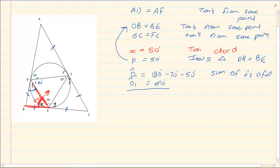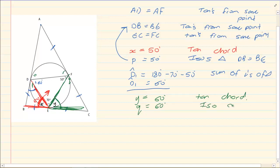If angle D1 is 60 degrees, what is Y? You have to be able to see the tan-chord because it is such an important theorem. So Y is equal to 60 degrees — tan-chord theorem. And if Y equals 60 degrees, Q is equal to 60 degrees because it is an isosceles triangle — EC is equal to FC, as stated earlier.